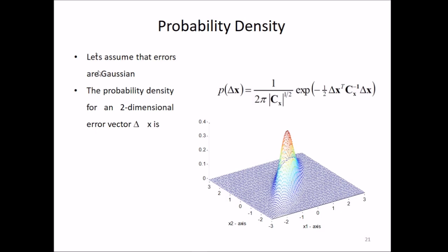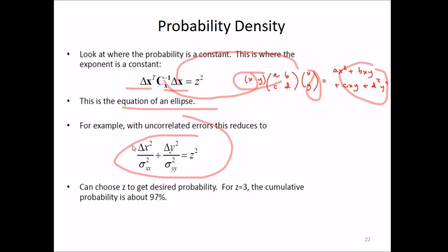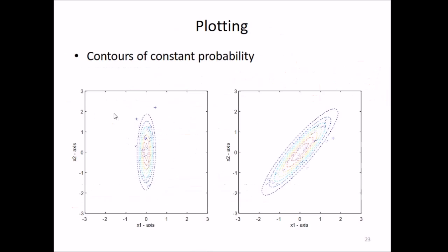Let us assume that errors are Gaussian. This is the expression of probability density. The probability density of a two-dimensional error vector delta x is given by this equation. If we consider where the probability is constant, the exponent is constant. If we take delta x transpose times C times delta x, there will be an ellipse. This is the equation of the ellipse. For example, with uncorrelated errors this reduces to these values. We can choose z to get the desired probability. For z equal to 3, the cumulative probability is around 97 percent. This is the contour of constant probability.